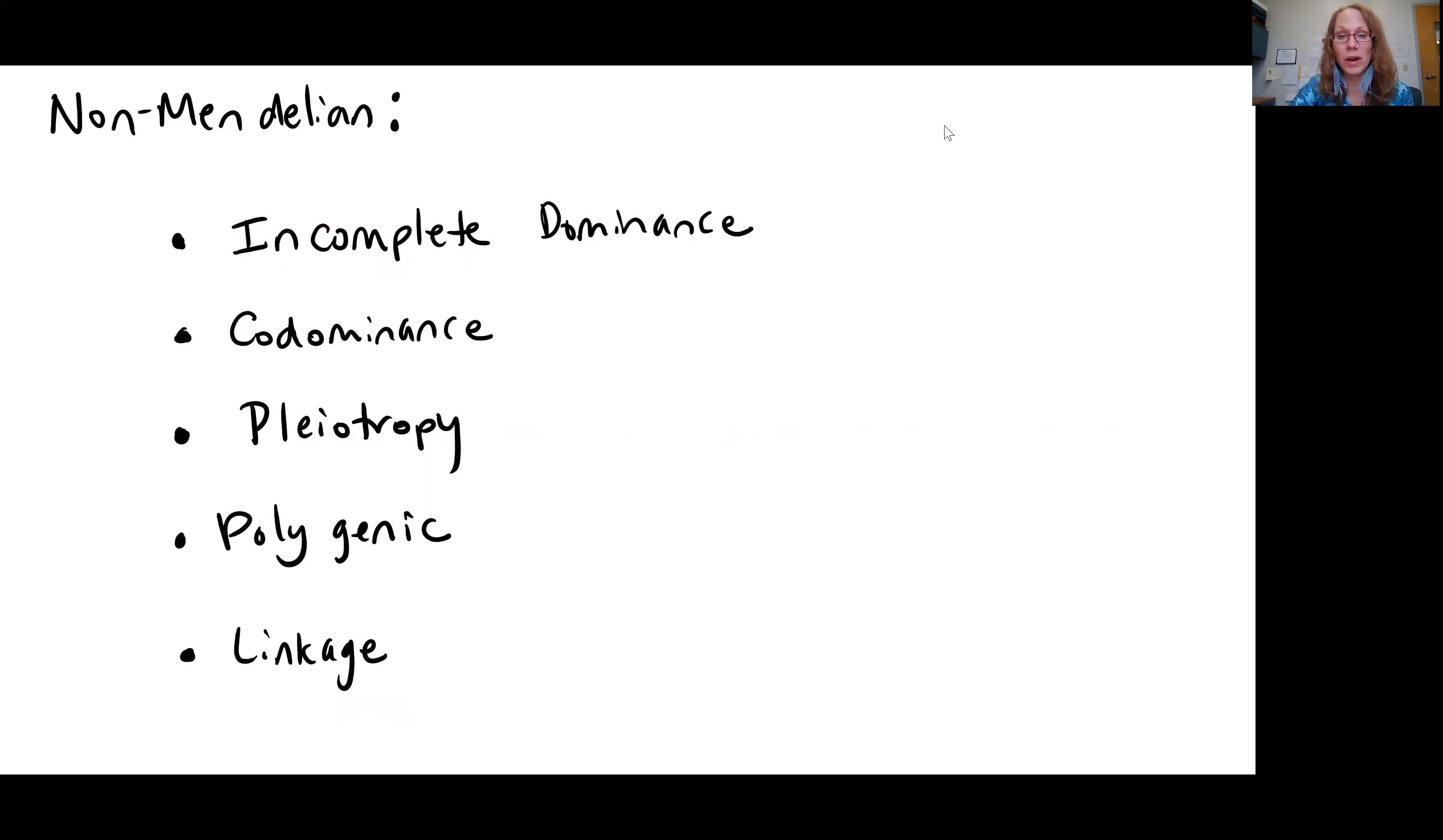As we progress through, we're going to see that it doesn't always work that way. That's actually the most simplistic type of inheritance. We're still following along with the ideas that genes can come in different forms called alleles, and that we are inheriting two alleles for each gene, one from each parent. And those alleles are located on chromosomes, but they can be inherited in ways other than complete dominance.